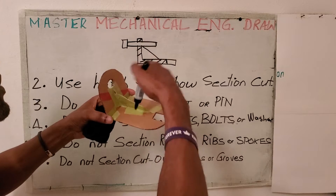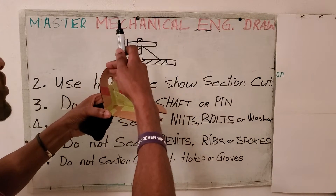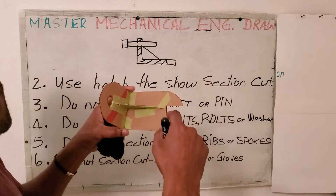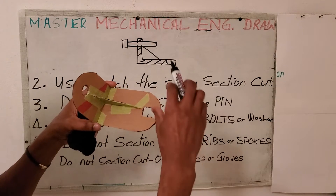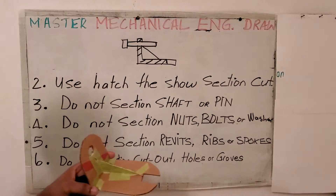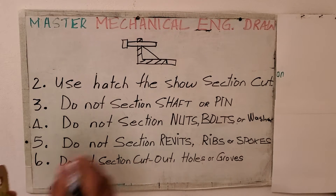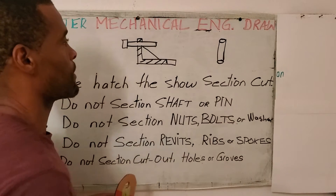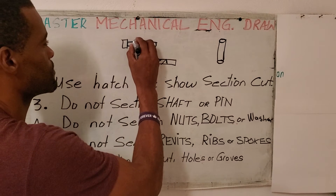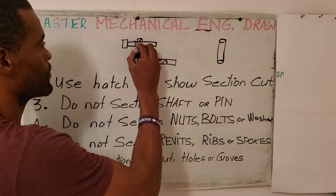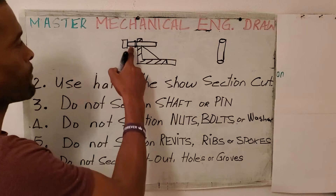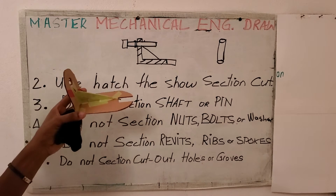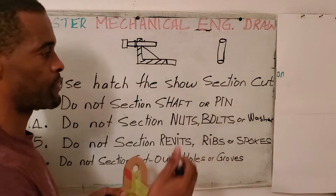So here we cut across with the shaft in here. We do not section the shaft, we do not section the web, and we do not section the part that the knife doesn't come in contact with. The knife cuts across here and doesn't touch here, so that section is left un-hatched. A pin is like a small piece of wire. You might have a pin here to prevent something from moving, or pins on both sides to prevent it from slipping out or being removed. We do not section pin.